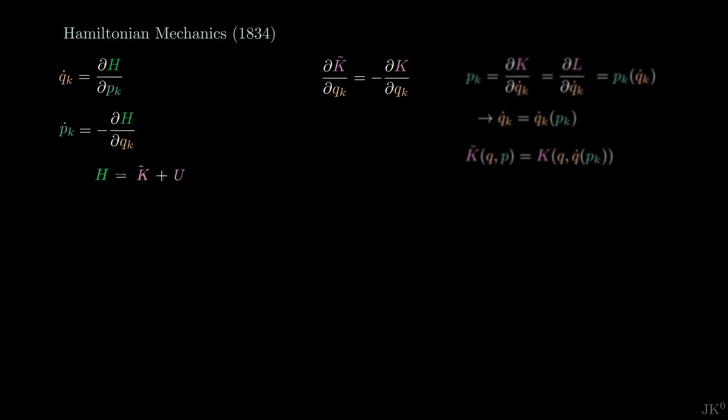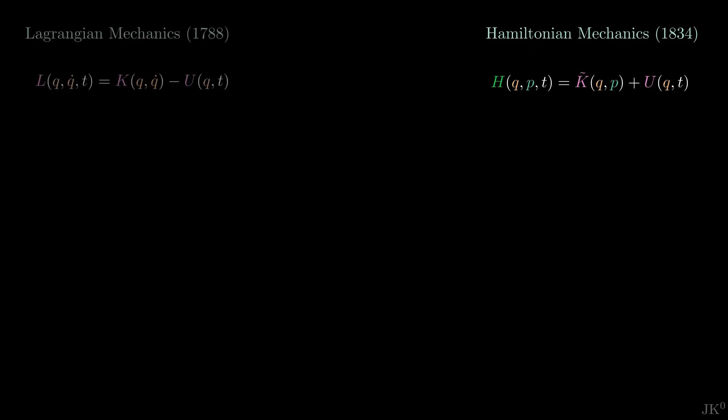Comparing the Lagrangian and Hamiltonian formalisms, we see how the Lagrangian is K minus U in terms of q and q-dot, whereas the Hamiltonian is K plus U in terms of q and p. The Euler-Lagrange equation gets replaced by the canonical equations in terms of the Hamiltonian. One important component of the formalism is missing, the Hamiltonian action.